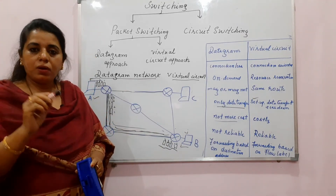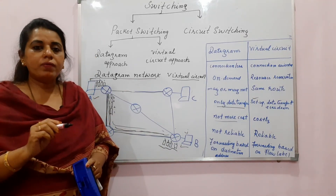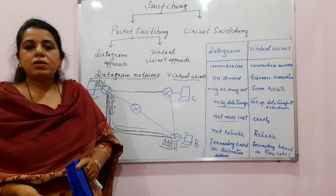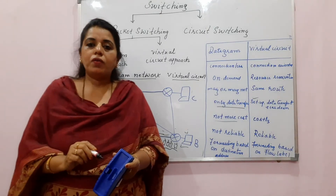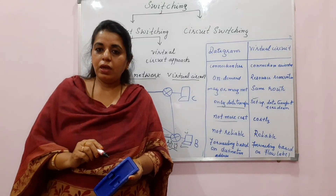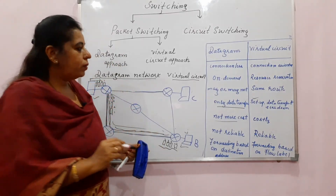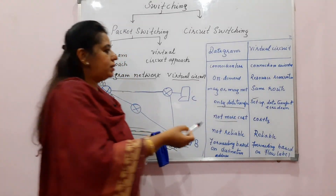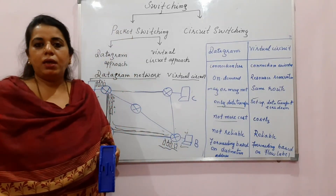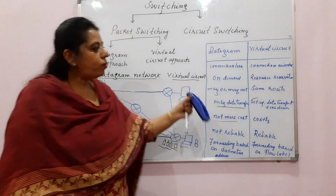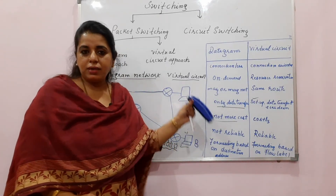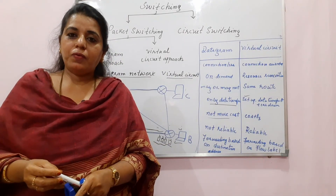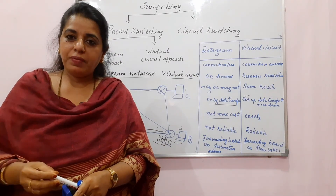In the datagram approach, the router always forwards based on the destination address, whereas in the virtual circuit approach, the router forwards based on the flow label. Looking at the differences overall, we can say that the datagram approach is more advantageous than the virtual circuit approach, and it is this approach that is used presently on the internet — whether it is IPv4 addressing or IPv6 addressing. I shall be discussing those things in detail.